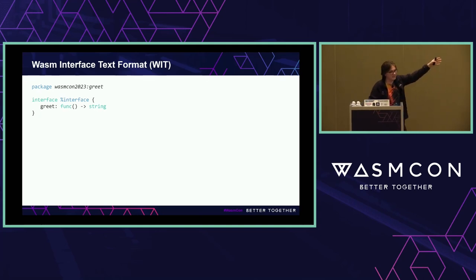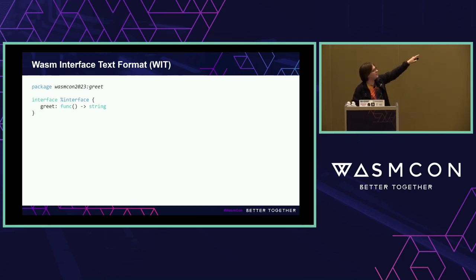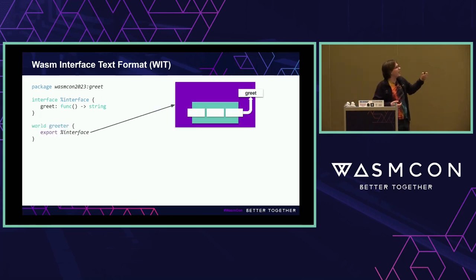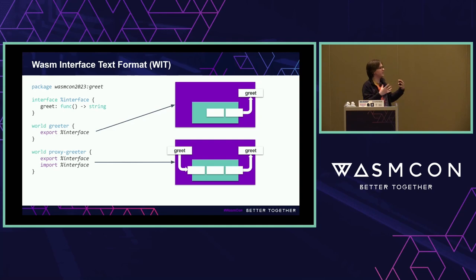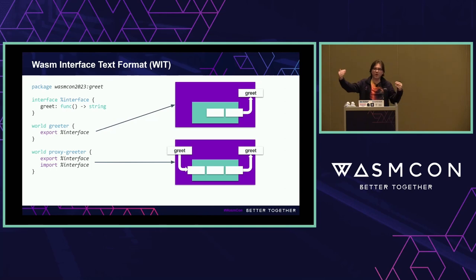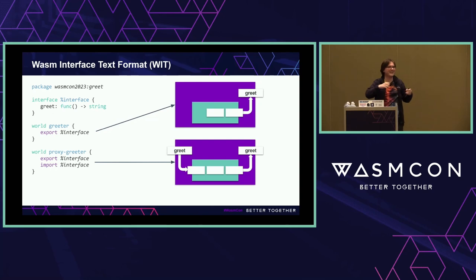This is what WIT looks like. We're defining a little interface in my wasmCon2023 greet package. That interface just exports a greet function that returns a string when you call it. The component we looked at before has the shape of a world — where it just exports this interface. But we can also define other worlds, like this proxy greeter world, that imports a greet interface and exports it. This means when we call this component's greet function, it can call the other greet function and compose them together — it can concatenate things onto it.